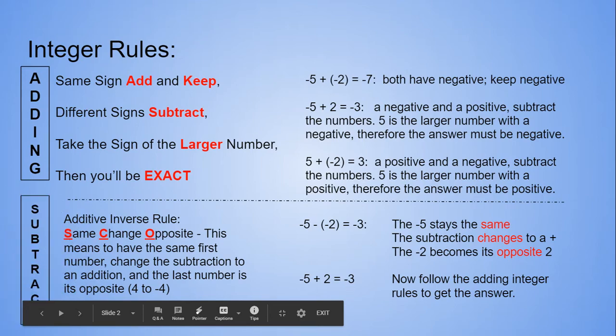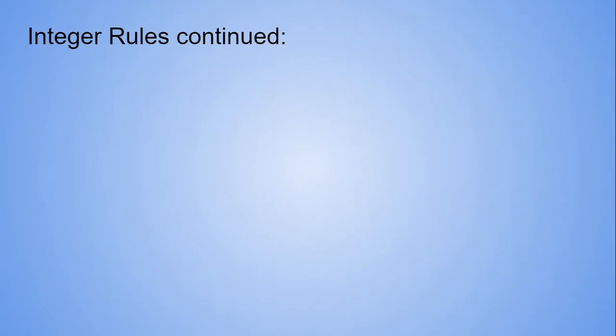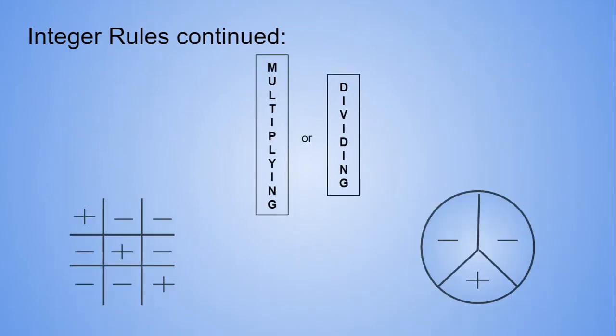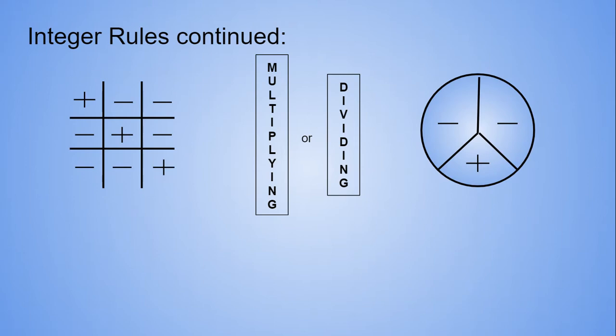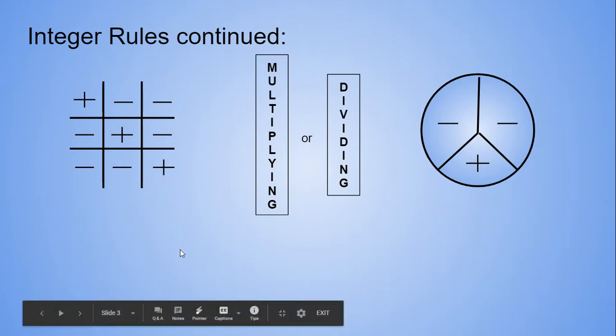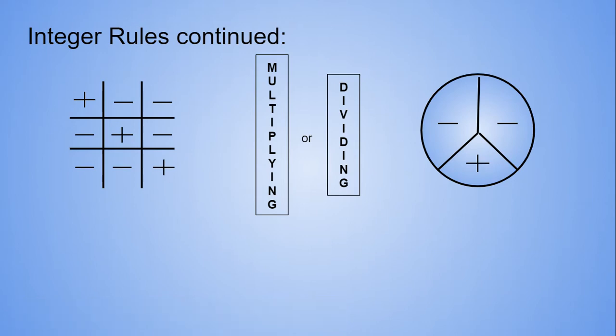For multiplying or dividing, we have two diagrams: a tic-tac-toe board or a peace sign. You read the tic-tac-toe board in any direction. With the peace sign, you cover up what the problem is asking to see what is left over for the answer. We have a few examples underneath both. It doesn't matter which one you use for either operation, whichever one you're comfortable with.